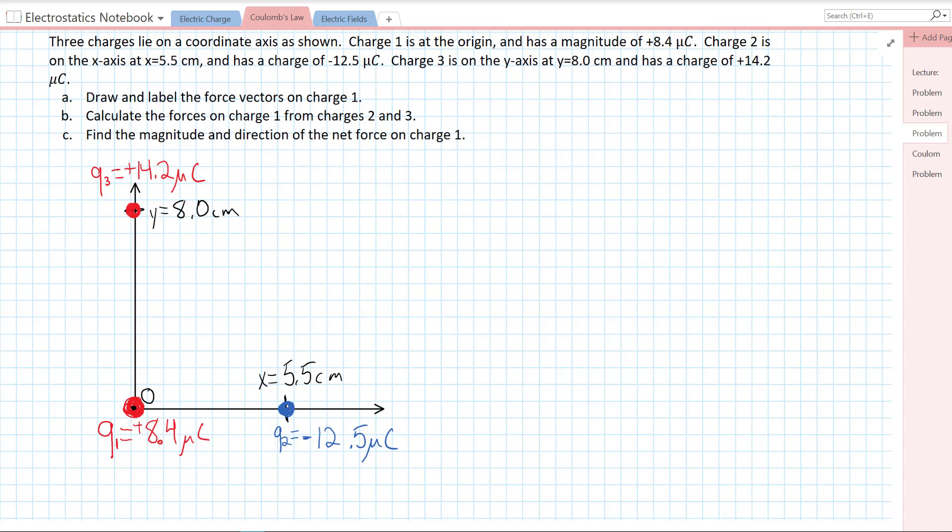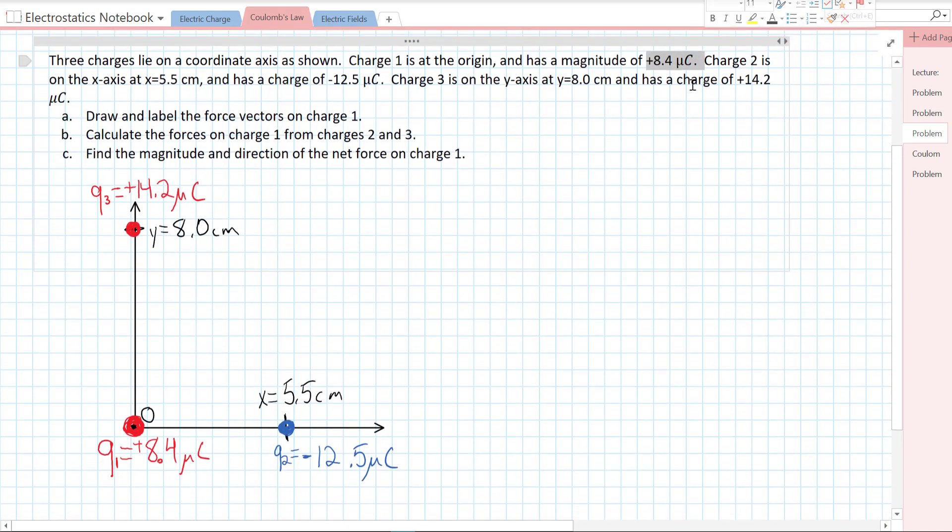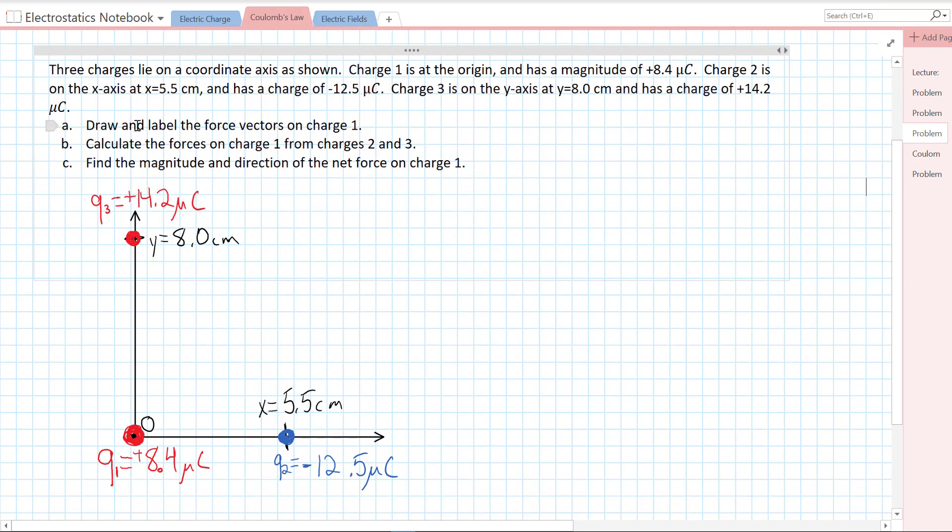Three charges lie on a coordinate axis as shown. Charge one is at the origin and has a magnitude of plus 8.4 microcoulombs. Charge two is on the x-axis at x equals 5.5 centimeters and has a charge of negative 12.5 microcoulombs. Charge three is on the y-axis at y equals 8.0 centimeters and has a charge of plus 14.2 microcoulombs.